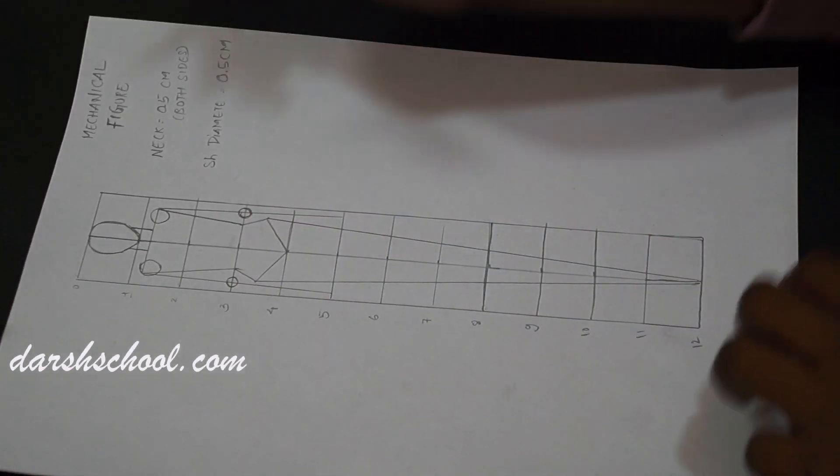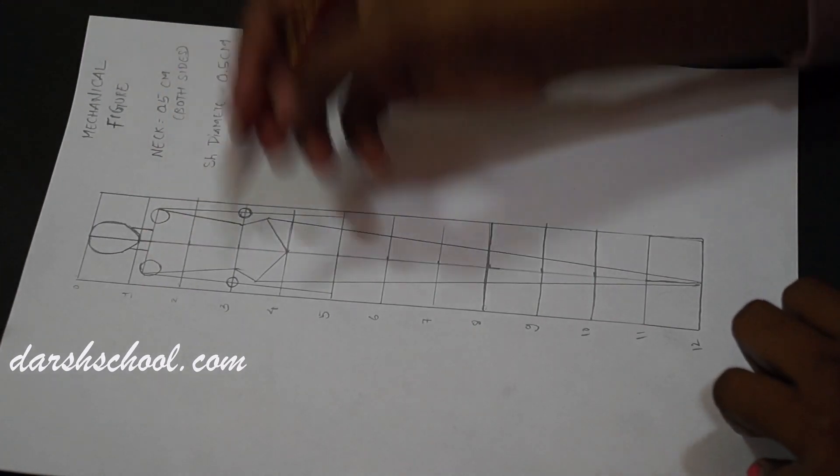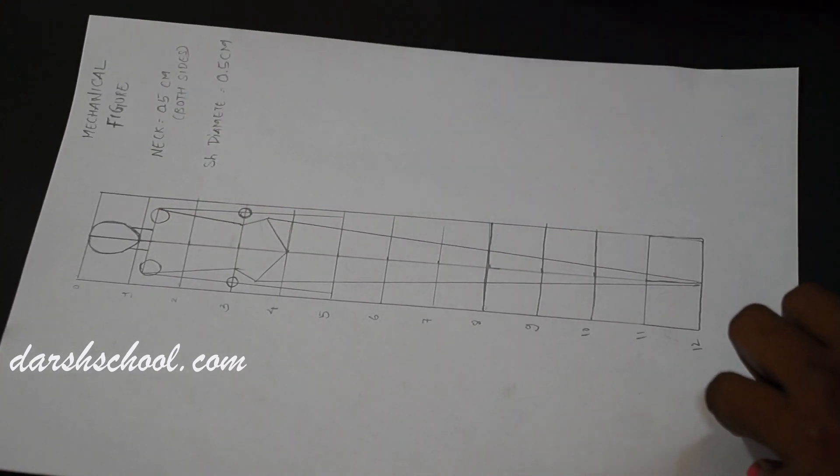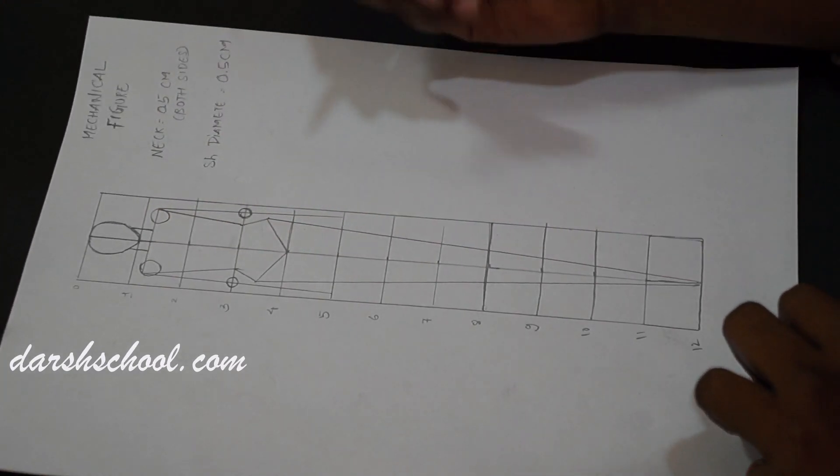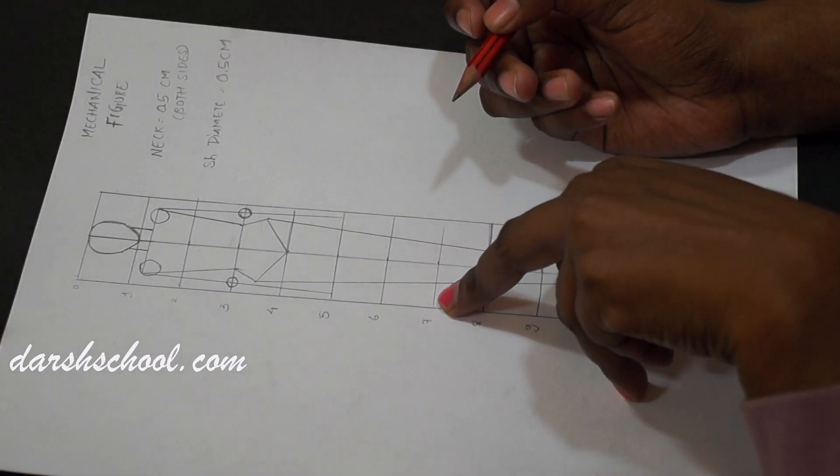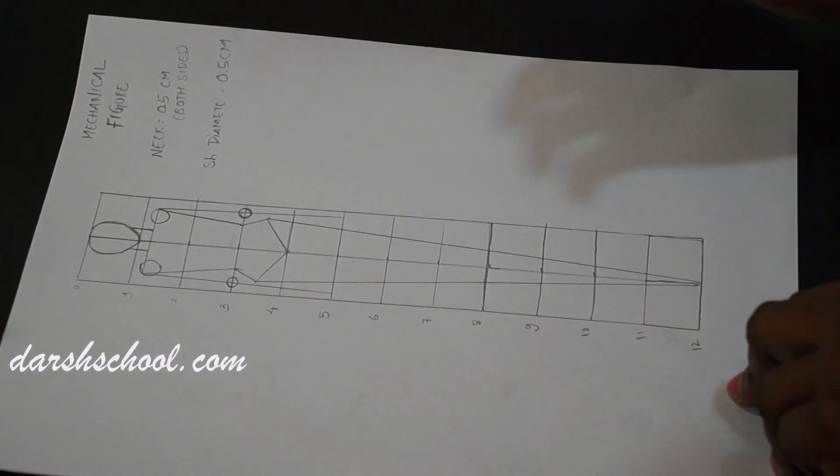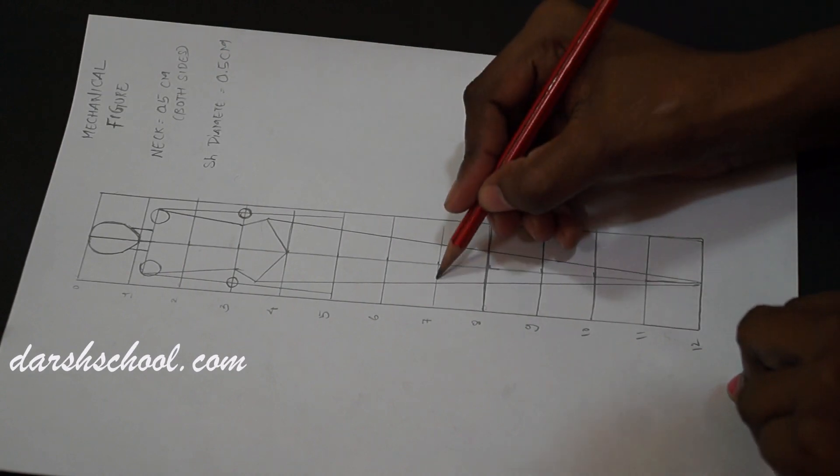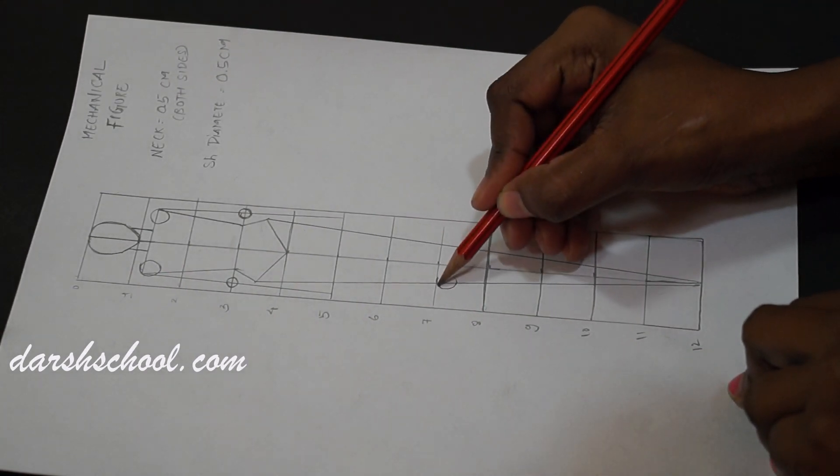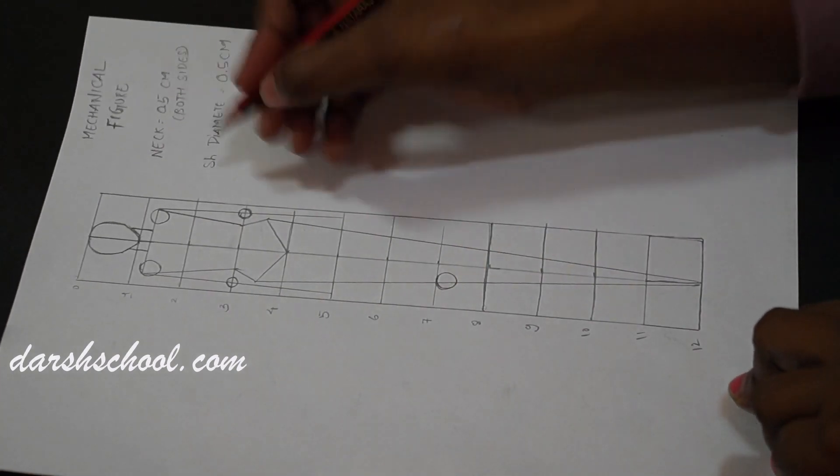Now what is the use of circle? Circle will help you to give a proper curve to your body like shoulder, like waist, like calf, ankle. So these are the points where we require circles. And here as I explained to you 7th is the point where you get your knee. So below knee you have calf. So calf has curve here.